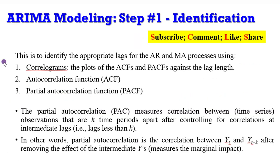To identify the appropriate lags for the AR and MA processes, you require the correlogram — the plot of the ACF and PACF against their respective lag lengths. The ACF is the autocorrelation function, and the PACF is the partial autocorrelation function. The PACF measures correlation between time series observations that are k time periods apart, after controlling for correlations at intermediate lags — essentially measuring marginal impacts.